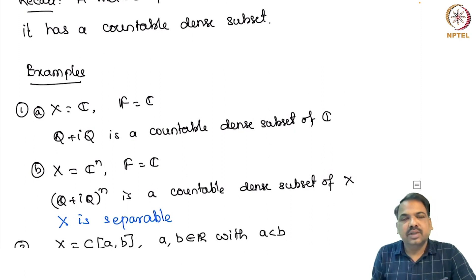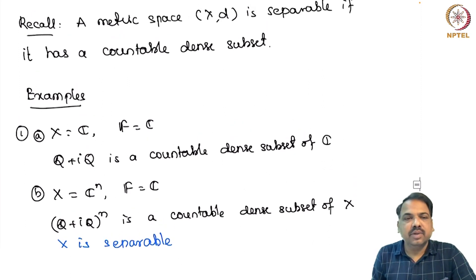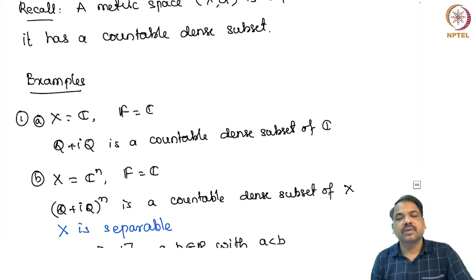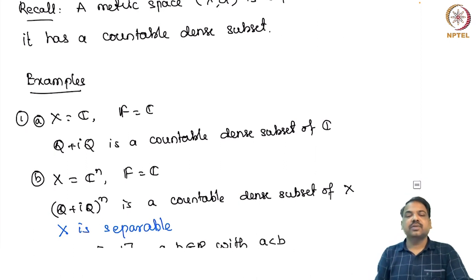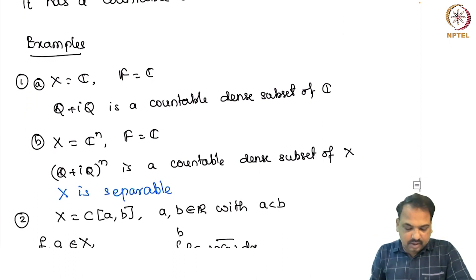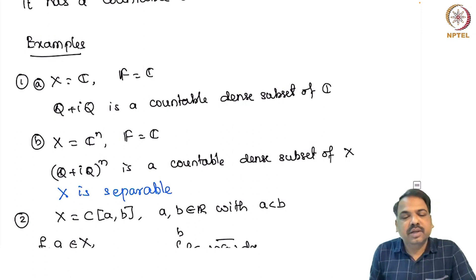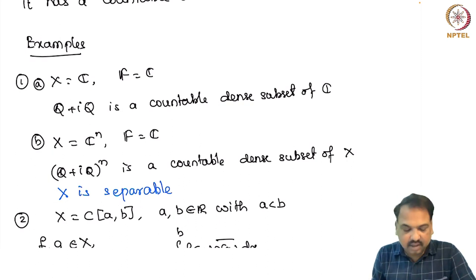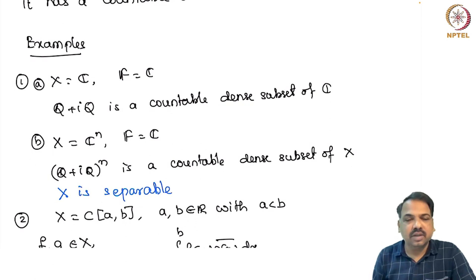Our main aim is to discuss separability in an inner product space. That is why we are looking at examples of inner product spaces which are separable. Let us take X to be C^n over the field C. Then Q plus iQ, all to the power n, is a countable dense subset of C^n. Hence X equal to C^n is also a separable inner product space.